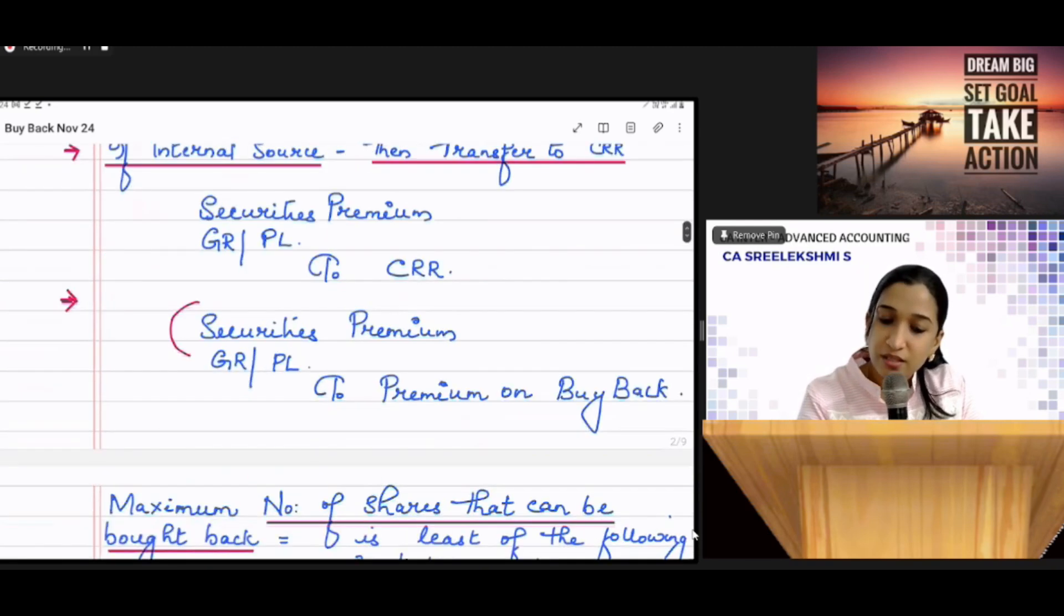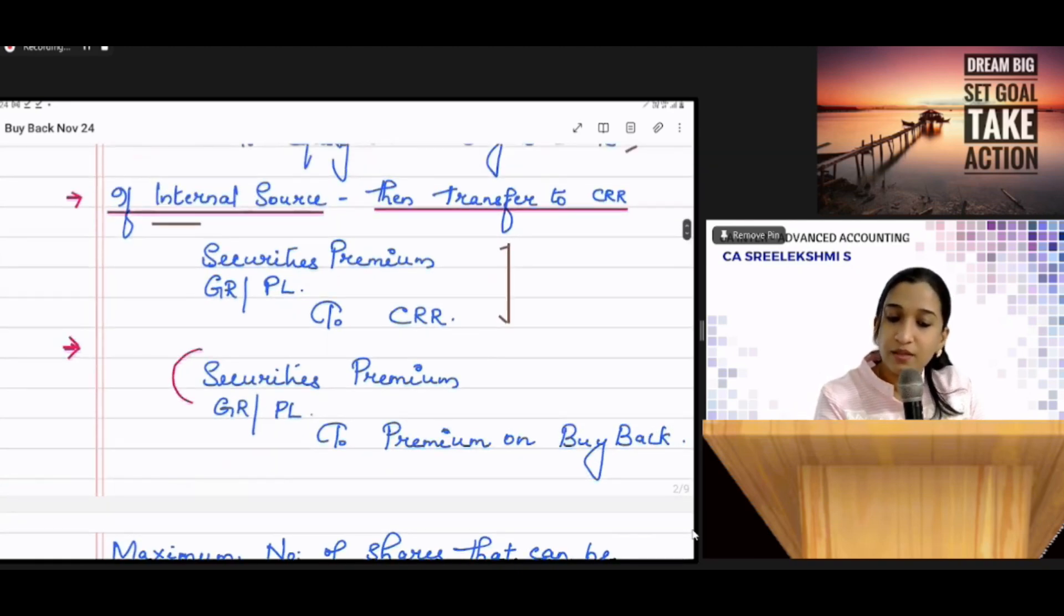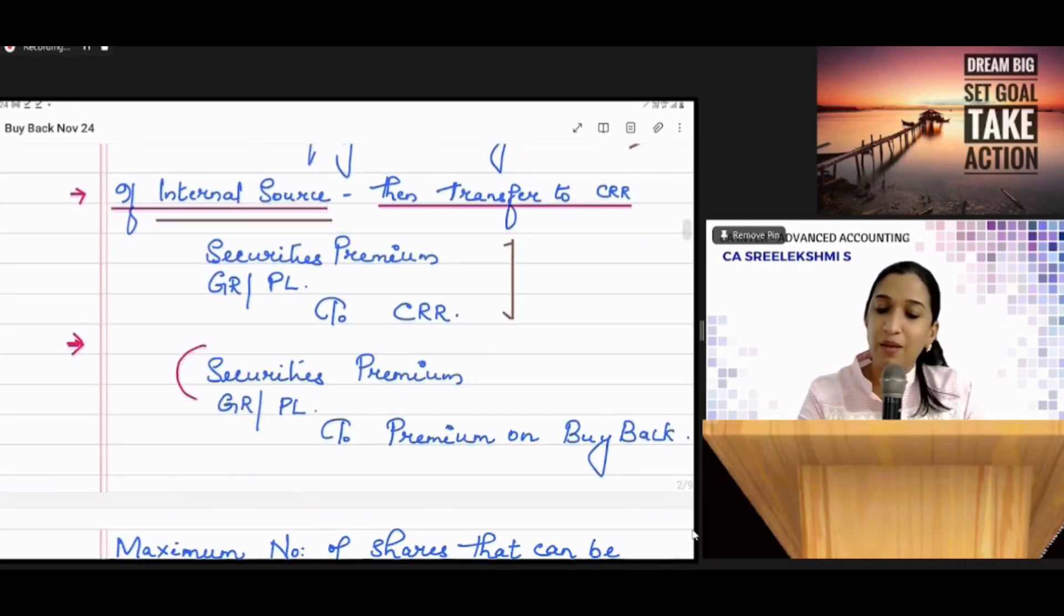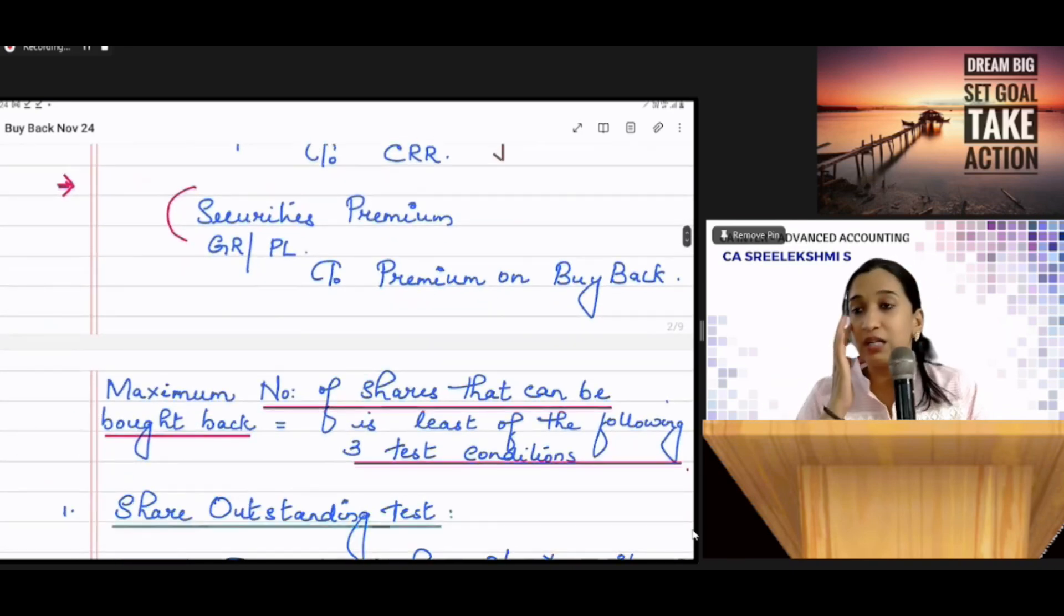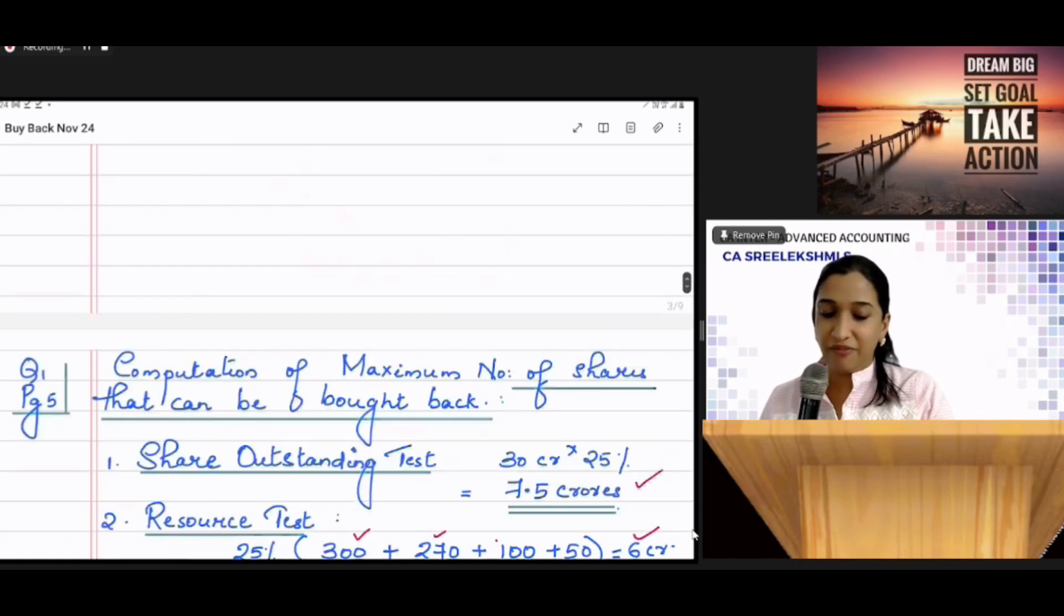Then, transfer to, only when you are using out of, premium on buyback can be sourced out of Securities Premium Account, Section 52(2)(d). And you will be getting a balance sheet also. It's a balance sheet format that we have discussed.